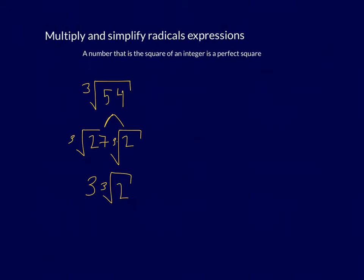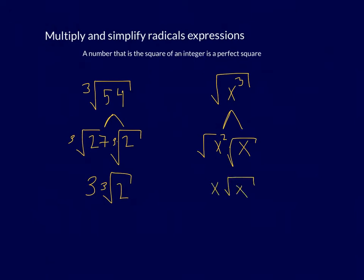Let's go back to square roots. Let's say I had the square root of x cubed. I would want to pull out a perfect square — x cubed is x squared times x. Taking the square root of each: the square root of x squared is x, and the other x stays inside. Technically, the square root of x squared is the absolute value of x, so that would be our final answer. Don't forget those absolute values.